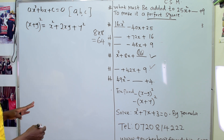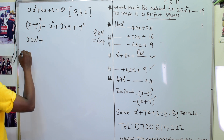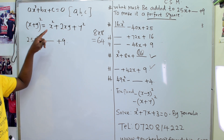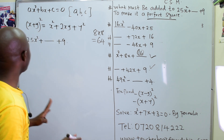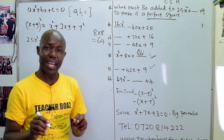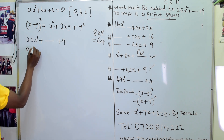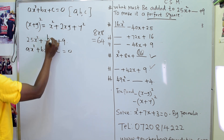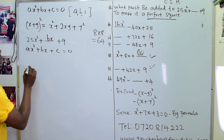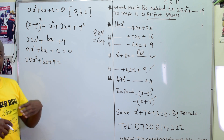Now, given the example 25x squared plus dash plus 9, what must be added to make it a perfect quadratic? The first step is to compare it with the original quadratic formula: ax squared plus bx plus c equals 0. The ax squared part is 25x squared, and the bx is not given, so we let that part be bx. Rewrite it as 25x squared plus bx plus 9 equals...